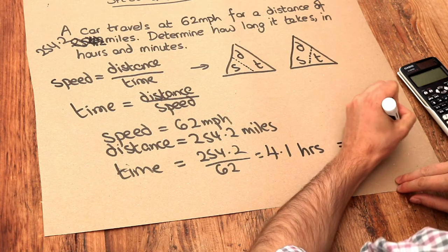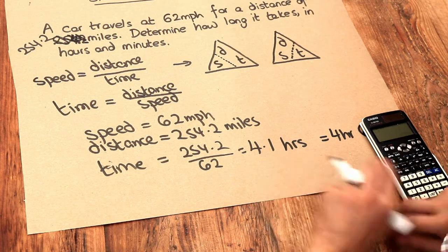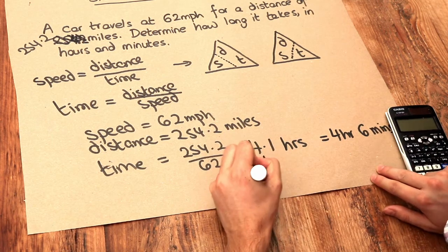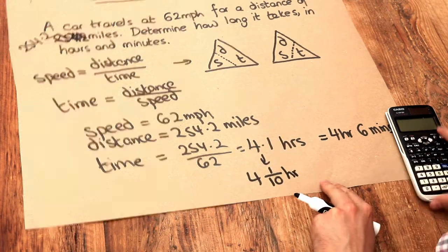Now if you don't have that key, you can still work this out because we've got 4.1 hours. 0.1 as a fraction is a tenth. So it's 4 and a tenth of an hour.